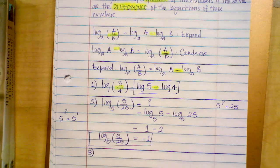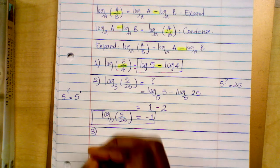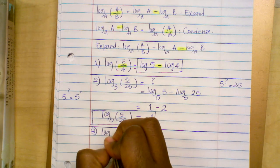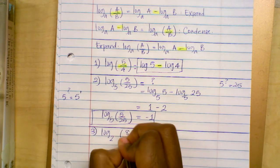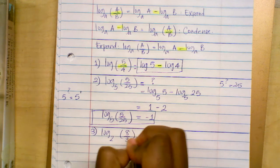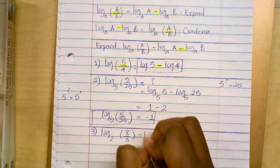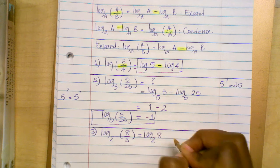The next example: log base two of (eight over three) is equal to log base two of eight minus log base two of three.